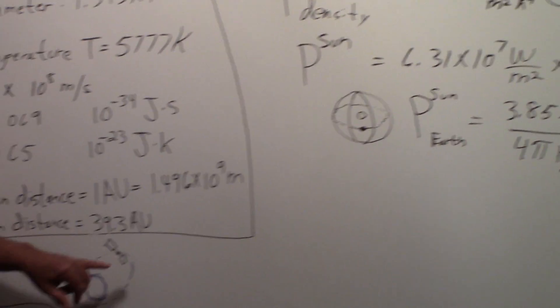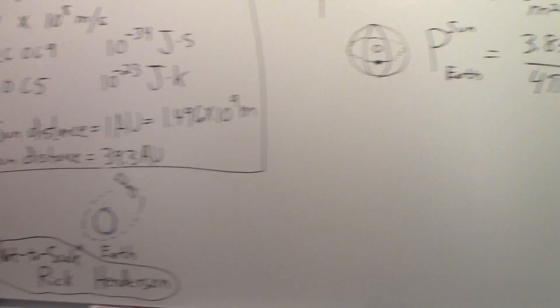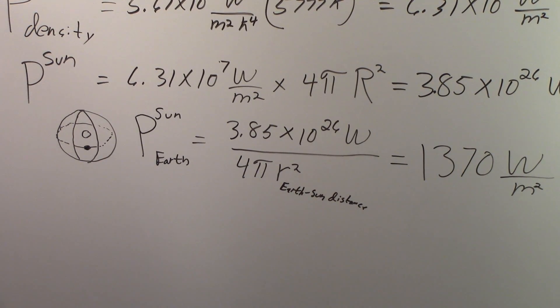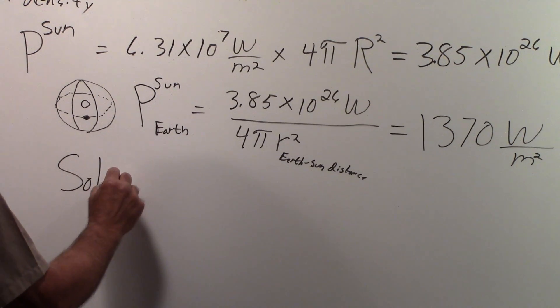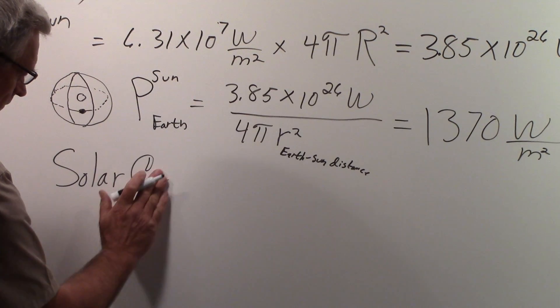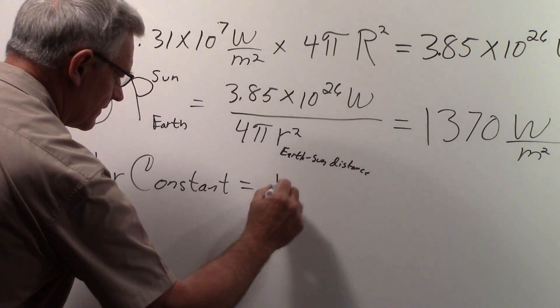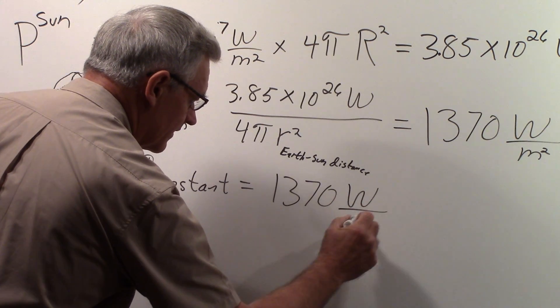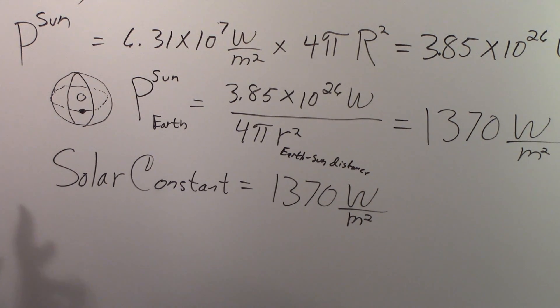So going back to the little diagram for the satellite, these solar panels will receive 1,370 watts per square meter, roughly a kilowatt per square meter of the solar panel. And so the solar constant, that is equal to the solar constant. The solar constant at the earth is equal to 1,370 watts per meter squared. That's at the earth-sun distance.